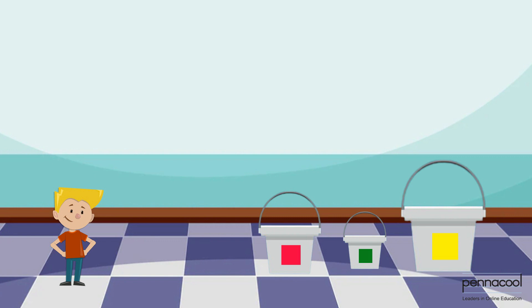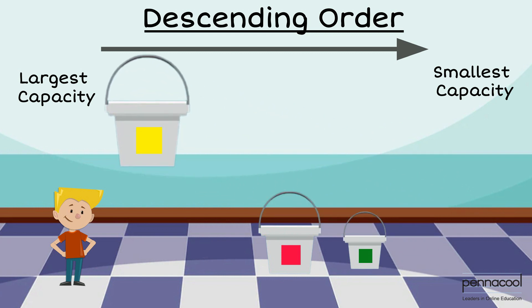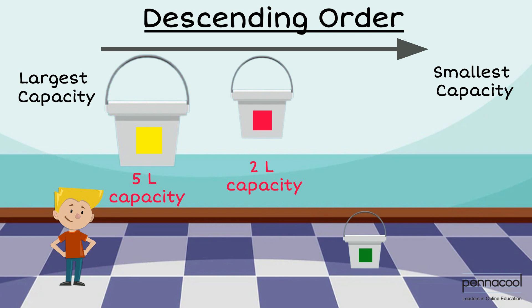Adrian has three paint buckets that he has to arrange in descending order. He picks out the largest bucket as it can hold the greatest amount of paint. This bucket has a capacity of 5 litres. The other two buckets are significantly smaller — one can hold 2 litres while the other can only hold 1 litre.